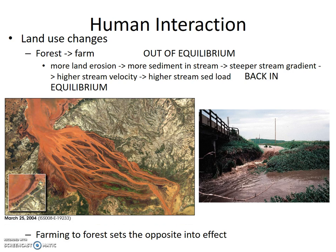In summary: more land erosion leads to more sediment in the stream, which leads to a steeper stream gradient. That leads to a higher stream velocity, so there is a higher stream sediment load, and the stream is back in equilibrium.